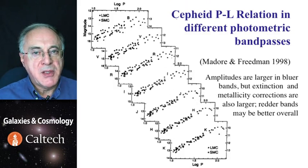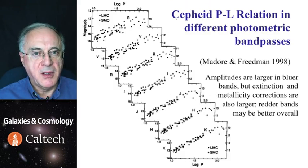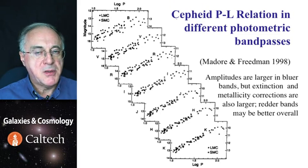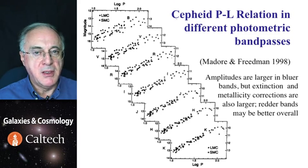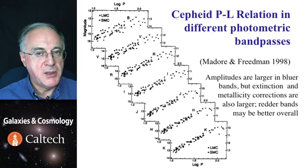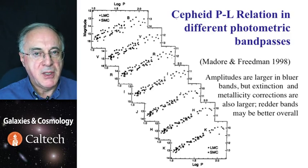Here are some examples of Cepheid period-luminosity relations in the Magellanic clouds in different filters. The scatter is biggest in the blue band and smallest in the near-infrared. However, the amplitudes are biggest in blue and smallest in near-infrared. It's a good idea to observe them in different bands so that the effects of extinction can be taken out.